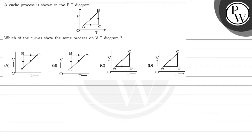Hello bachon, let's read this question. The question says a cyclic process is shown in the P-T diagram. This diagram shows a pressure and temperature curve where a triangle is given with vertices A, B, and C. Which of the curves shows the same process on a V-T diagram, where volume and temperature curves are given? These are the four options.